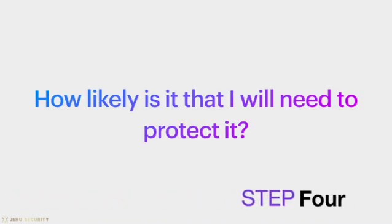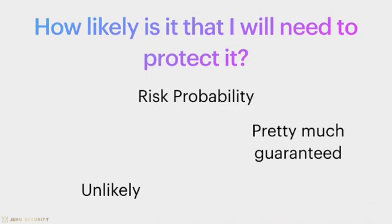Step four: how likely is it that I will need to protect it? This step speaks to the probability that a particular threat might be realized or acted upon — how likely is this threat to happen? The consequences from step three are the worst-case results; this step considers the probability of that threat actually occurring. This step can be very subjective and different for each individual. You may consider that some threats carry consequences too high no matter how likely they are, or that even with high probability, a particular threat isn't as large a problem. Select which threats are going to receive your attention and which ones you won't focus on for now — you can always come back to them later.